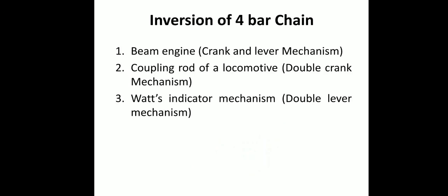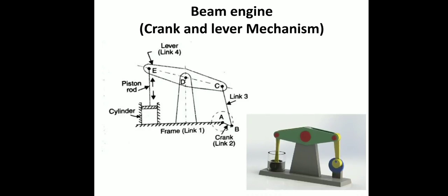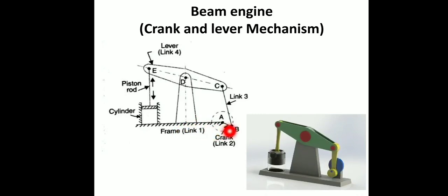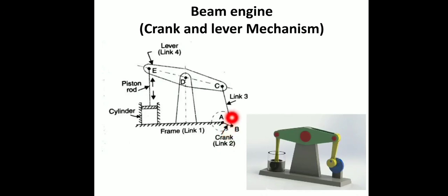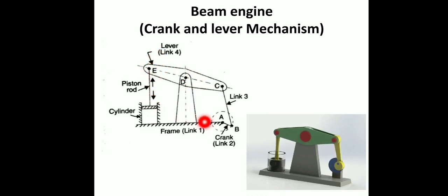These are the three inversions of the four bar chain. First of all we will discuss the beam engine. In a beam engine, if you have four links: link 1 is the fixed frame, link 2 is the crank, link 3 is the coupler, and link 4 is the follower output link. The links are fixed, shown in gray color, and the yellow color is the crank.